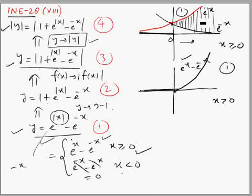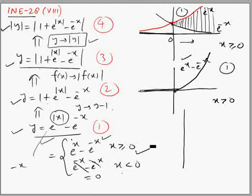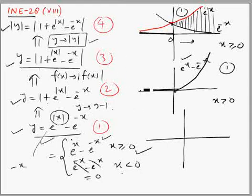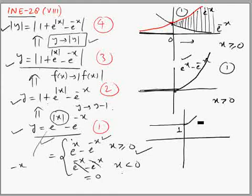Once we have the graph of the first function, we draw the second by shifting it one unit up. The horizontal line at 0 shifts up to y = 1, and the exponential part also shifts one unit up. This gives us the graph of y = 1 + e^(|x|) - e^(-x).